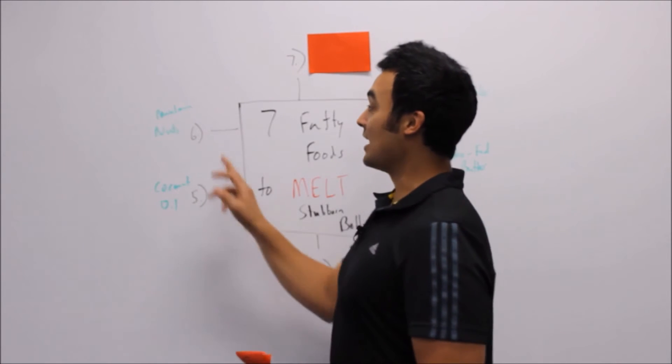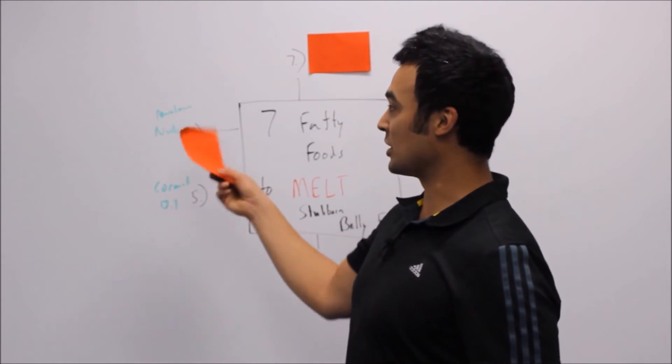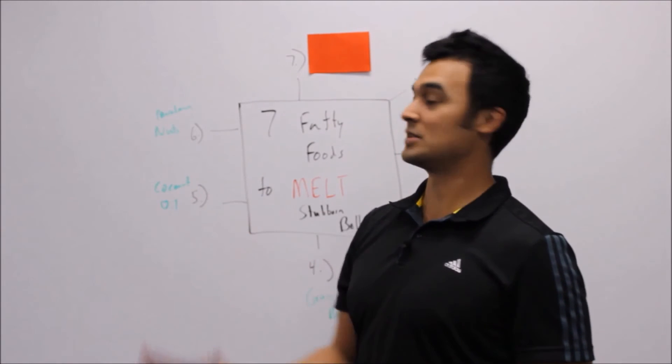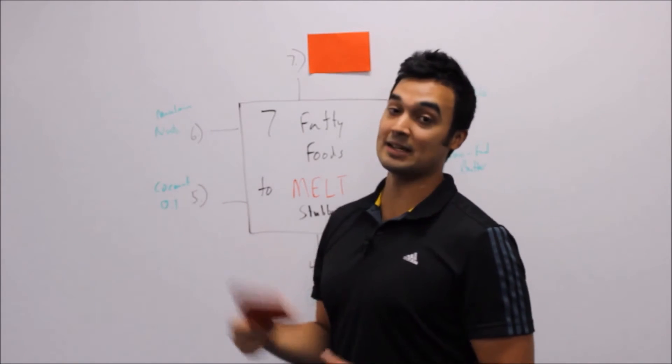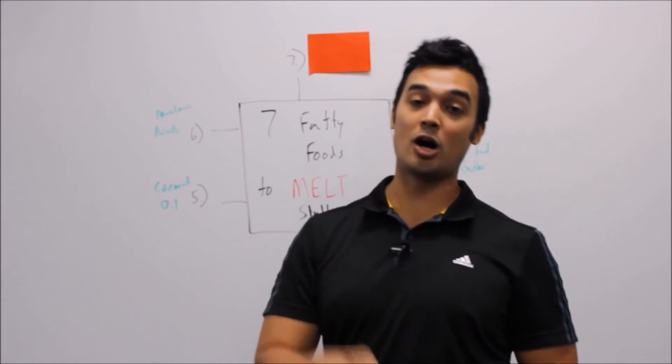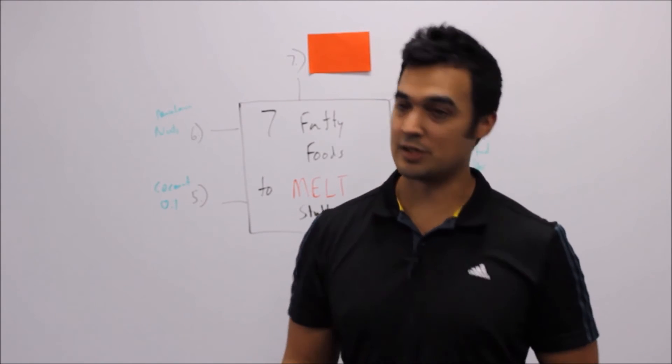And number six, macadamia nuts. You can also add like almonds, cashews, those type of nuts. I like macadamia nuts because they're the highest in monounsaturated and the lowest in polyunsaturated.